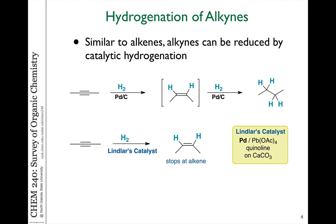So this provides us tools with which we can control what kinds of products we want. If we want to go all the way to the alkane compound, we can use the active catalyst palladium on carbon in the presence of hydrogen, or if we want to stop at the alkene stage, we use the poisoned catalyst, Lindlar's catalyst, which is a little less reactive.